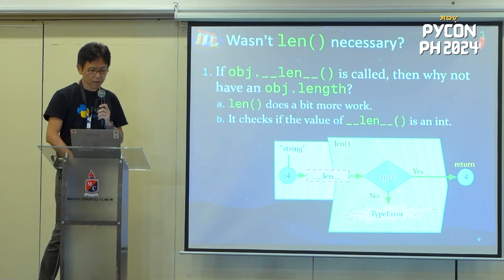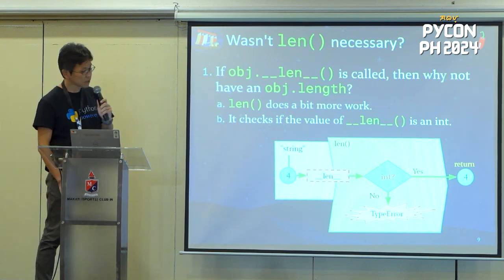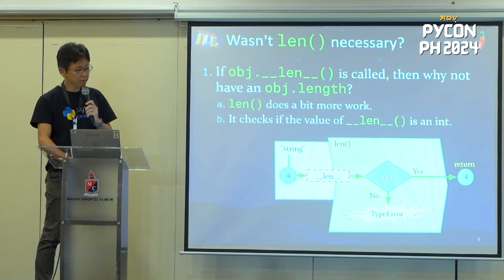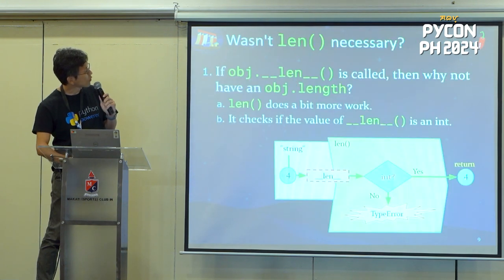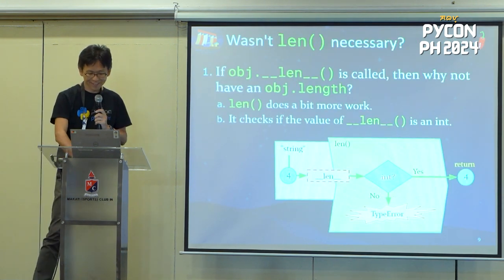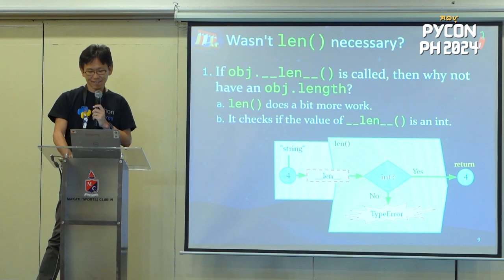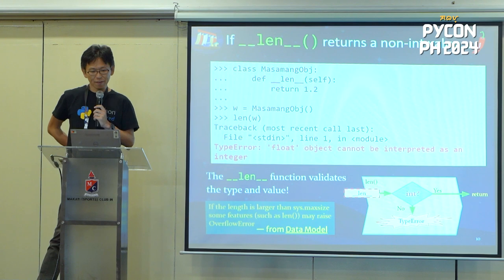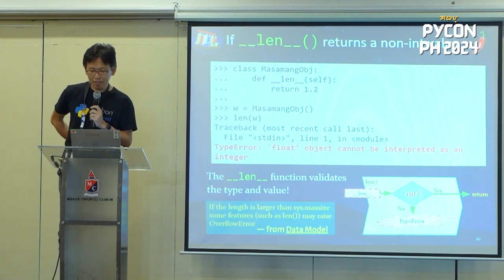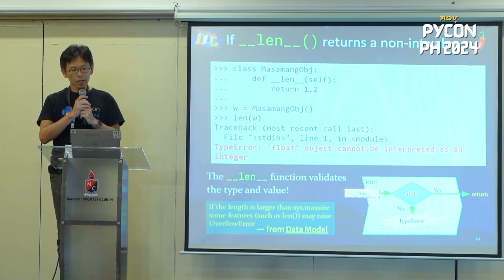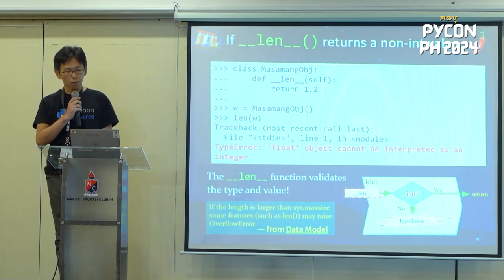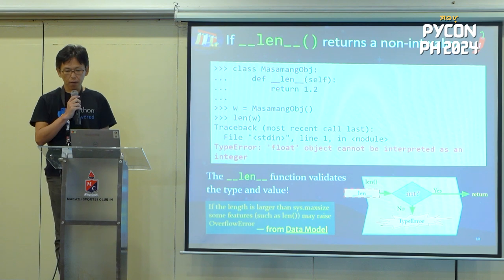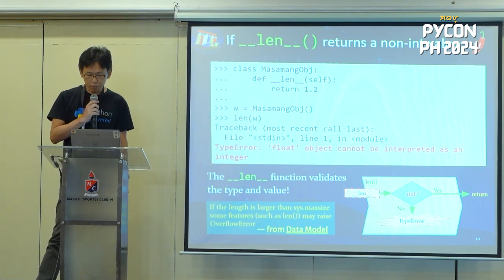By the way, did you see the top right chili icon is growing up? It's growing up. Getting longer. If `__len__` returns a non-int value, I wrote this code to see what happens. If `__len__` returns 1.2, a float, you get an error: 'float object cannot be interpreted as an integer'.